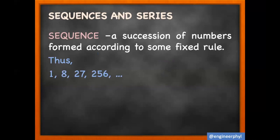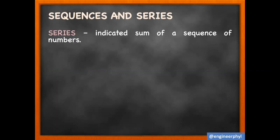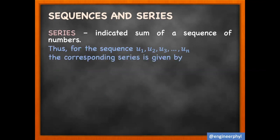For example, 1, 8, 27, and 256, and so on, is a sequence having the rule that the nth term is given by n cubed. Next, a series is the indicated sum of a sequence of numbers. Thus, for the sequence u₁, u₂, u₃, and so on, the corresponding series is given by u₁ + u₂ + u₃ + etc.